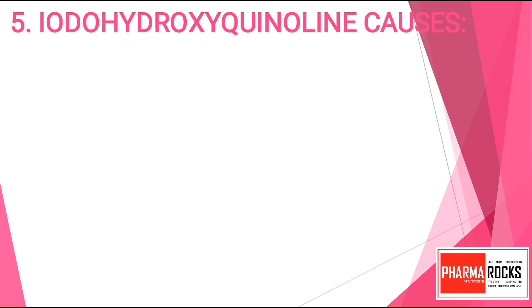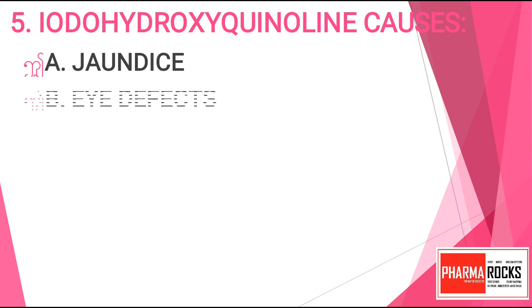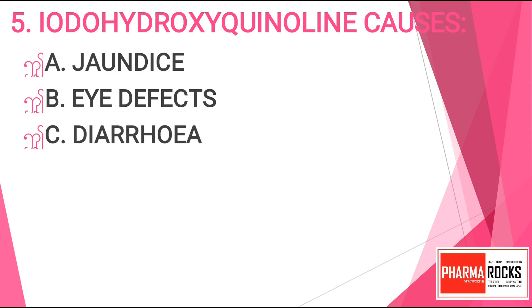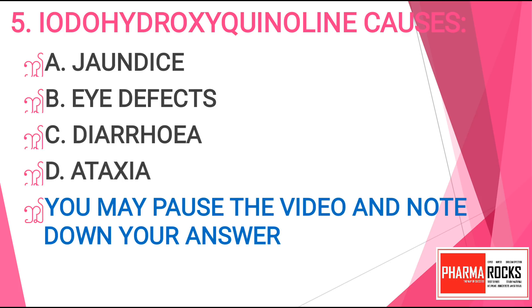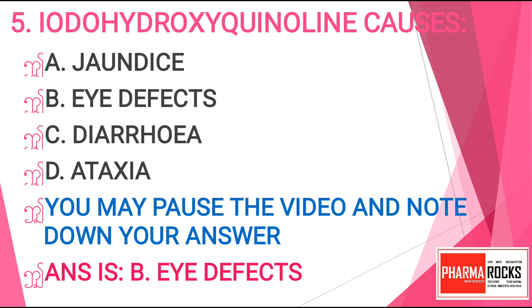Question 5: Iodohydroxyquinoline causes — Option A: jaundice, Option B: eye defect, Option C: diarrhea, or Option D: ataxia. You may pause the video and note down your answer. The correct answer for this question is Option B, eye defects.